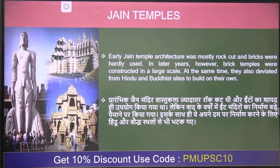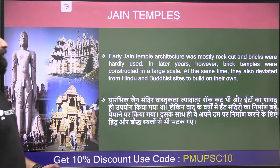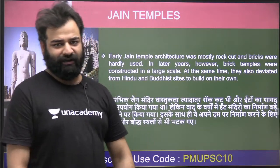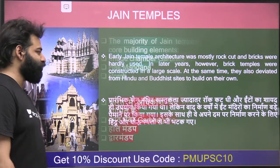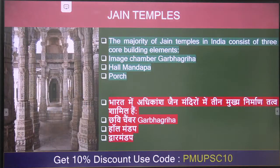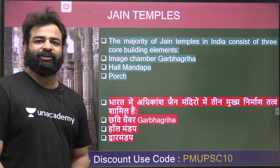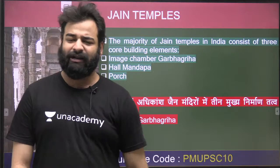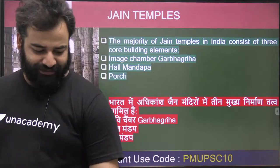In early temple architecture we saw that temples were built simply by cutting rocks - that is, rock-cut. But in later Jain temples, bricks were also used. So there are two phases: in early phases it was simply rock-cut, and in later phases alongside rock-cut, bricks were also used.